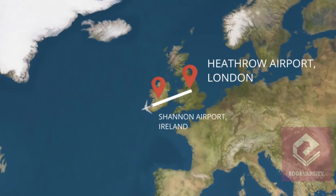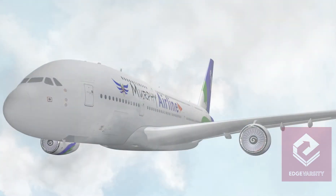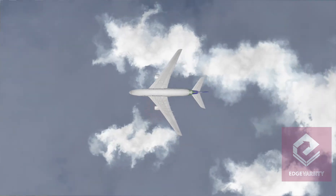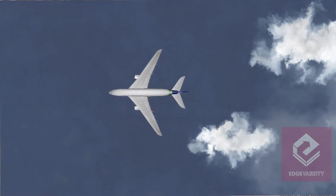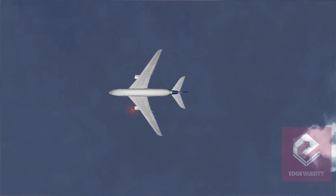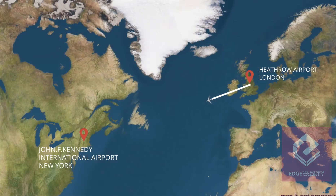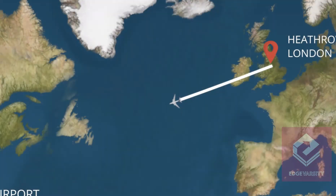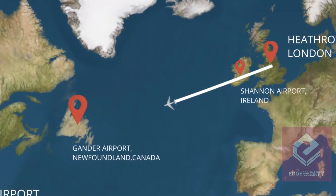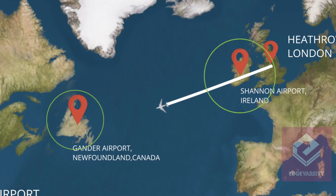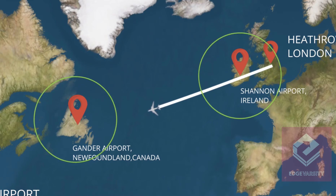Now let's consider a scenario where a twin engine aircraft on the way from LHR to JFK crosses Shannon Airport, and somewhere between Shannon and Gander, one of the engines goes down. In such an emergency, the aircraft must perform an emergency landing with only one engine in operation, but it might be capable of flying only for about 60 minutes. The two nearest airports, Gander and Shannon, are both more than 60 minutes away from the point where the engine has failed.